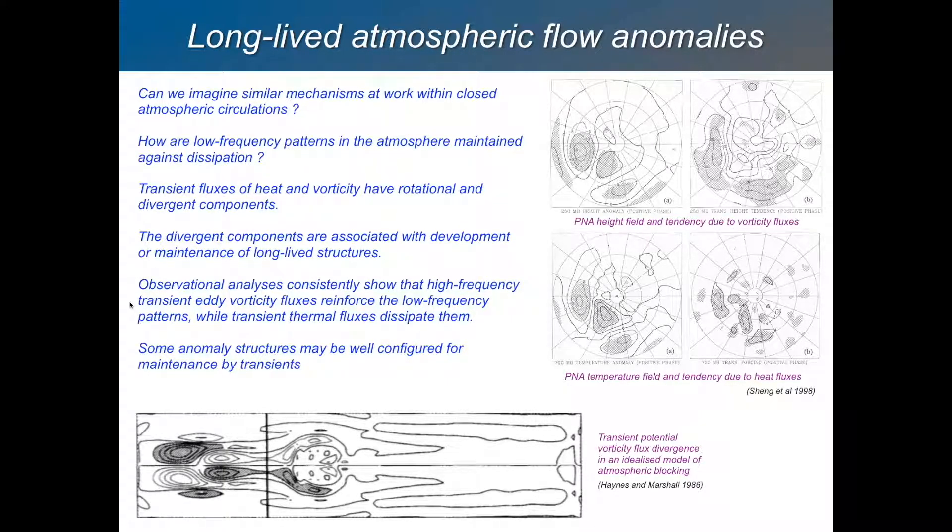That's the action, systematically, the action of transient eddies on low-frequency atmospheric variability patterns. Here at the bottom, here's an example of a very long-lived type of feature that you can get in the atmosphere, which we sometimes have over Europe, called blocking, in which there is a stable configuration of a high to the north and a low to the south.